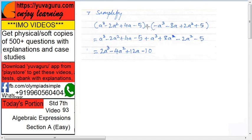as it is. Minus sign outside, so every sign changes. It becomes plus a cube here, plus 8a here, minus 2a square here, minus 5. First understand every step, then only go ahead. Otherwise, pause this video and watch again.